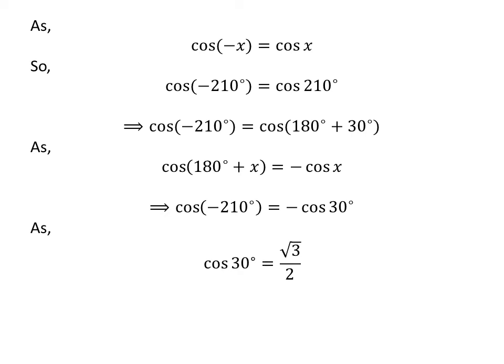We know the value of cosine of 30 degrees is equal to square root of 3 upon 2. So, the value of cosine of minus 210 degrees is equal to minus square root of 3 upon 2.